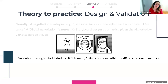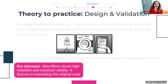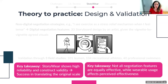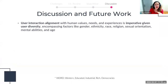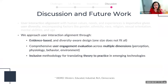We also found that not all negotiation features are equally effective across cohorts, while users of wearable devices find negotiation features more effective overall. Summing up, user interaction alignment is imperative given user diversity. We approach it through evidence-based and diversity-aware design, user engagement evaluation across multiple dimensions, and an inclusive and well-defined methodology for translating theory into practice. Embrace co-creation activities for developing technological products together with your target audience, incorporate theoretical frameworks for more effective interventions, and remember: one size does not fit all.